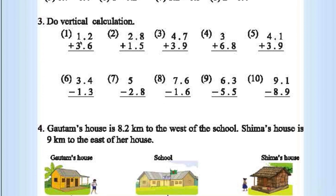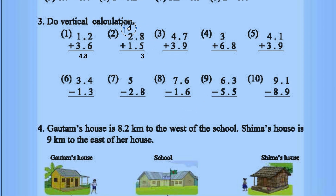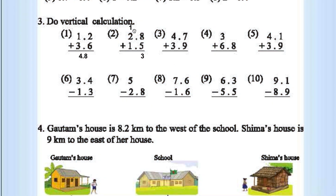Let's do some vertical calculation. 2 plus 6 is 8, 3 plus 1 is 4, answer is 4.8. Next: 8 plus 5 is 13, write 3 here, carry 1. The carry will move up to the ones place: 2 plus 1 plus 1 is 4, so the answer is 4.3.